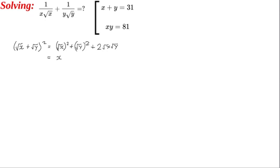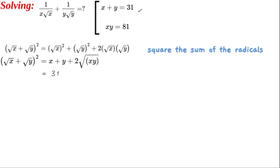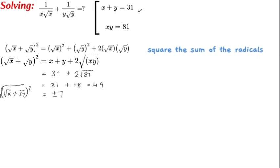Simplifying, we have x plus y plus 2 times the square root of xy. We have 31, and we also have the xy product, so we get 2 times the square root of 81, which gives us 2 times 9 equalling 18. This gives us 49 as a result. Taking the square root, √x plus √y equals 7.